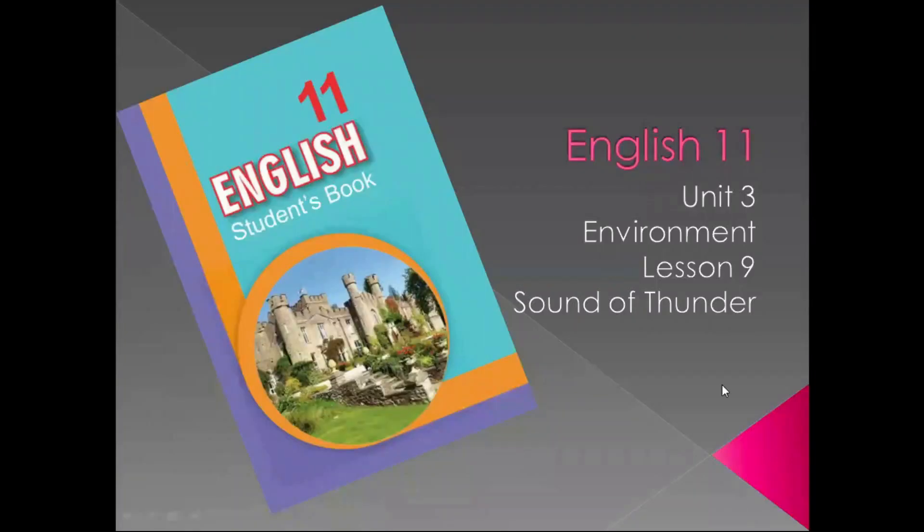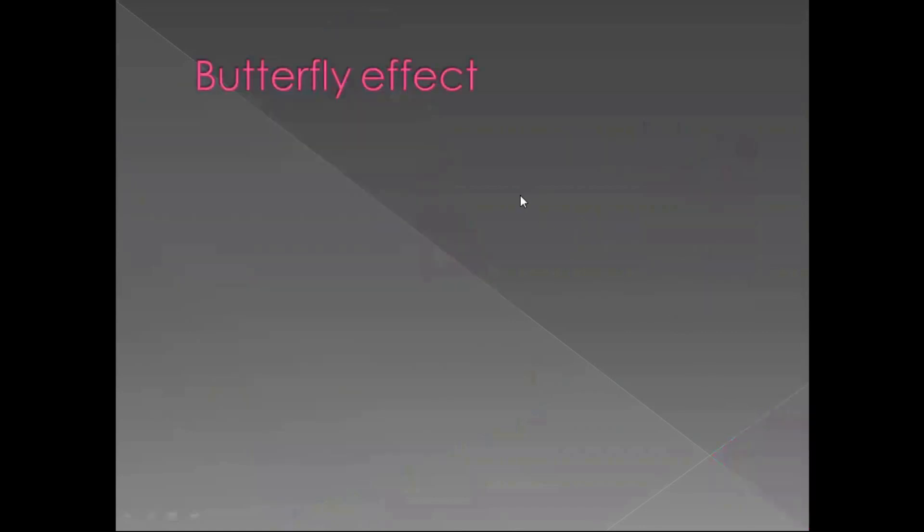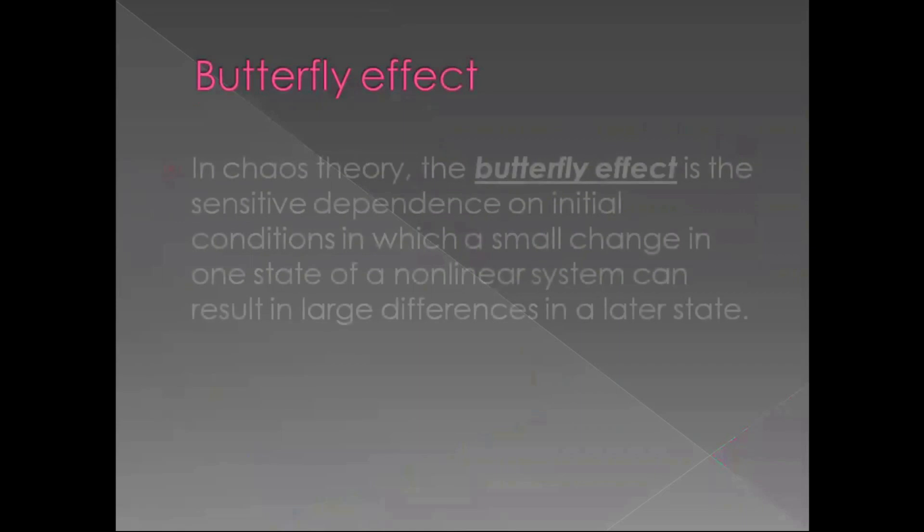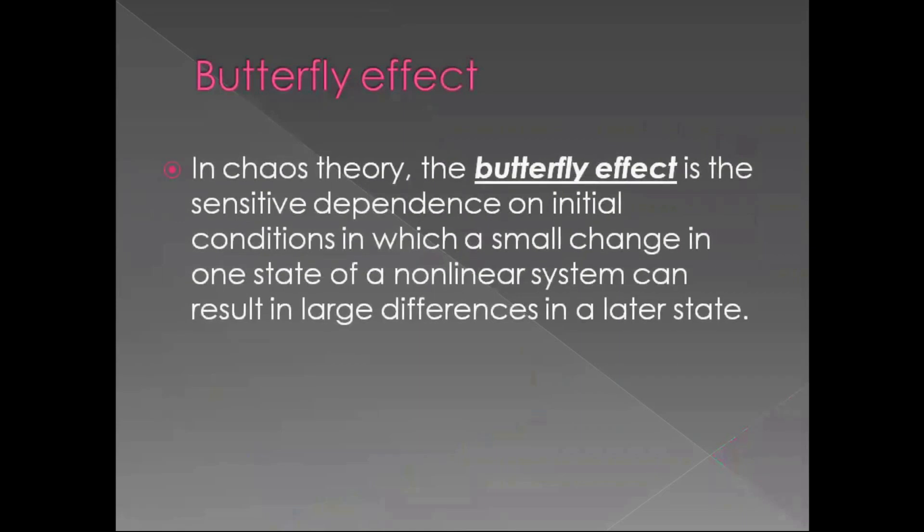Hello dear students, today we finish our topic on environment, Lesson 9 of Unit 3, Sound of Thunder. But to begin with, have you ever heard about a butterfly effect? According to the official notion, in chaos theory, the butterfly effect is the sensitive dependence on initial conditions in which a small change in one state of a nonlinear system can result in large differences in a later state. Проще говоря, эффект бабочки – это внесение незначительного изменения в начало истории, которое может привести к неожиданным большим изменениям в результате.